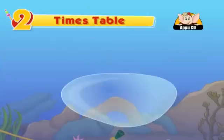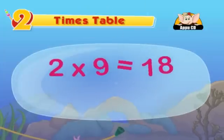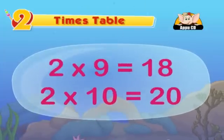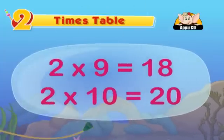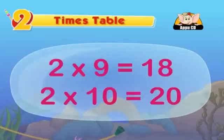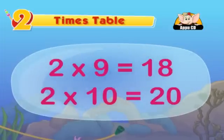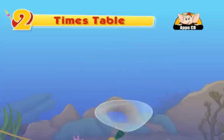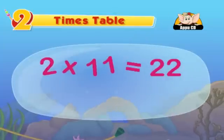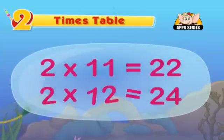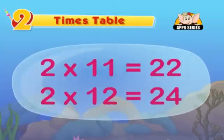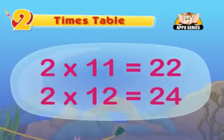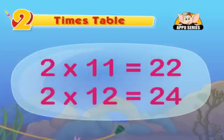2 9's are 18, 2 10's are 20. The table of 2 is almost ready. 2 11's are 22, 2 12's are 24. Now the 2 times table is what you know.